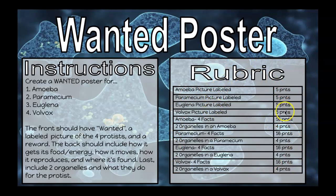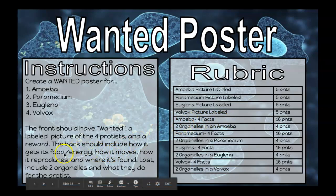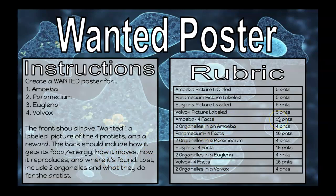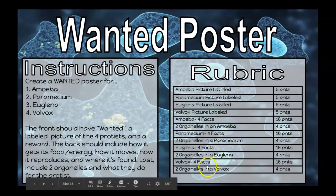Here you'll see your rubric and the points you'll get for specific things. On the front, the labeled picture for each of the four protists earns you five points each. For the amoeba, the four facts — how it gets food, moves, reproduces, and where it's found — are each worth four points, for a grand total of 16. The two organelles with descriptions are each worth two points, for a grand total of four. The same breakdown applies for paramecium, euglena, and volvox, adding up to a grand total of 100.